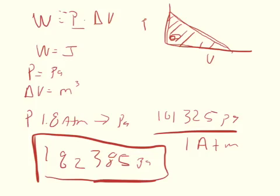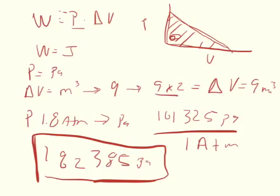In part A, it asks us if the volume were to double. So it gives us the initial volume of 9. If it went from 9 to 9 times 2, that's a change of volume equal to 9 cubic meters, because that would be the final volume of 18 minus the initial volume of 9.